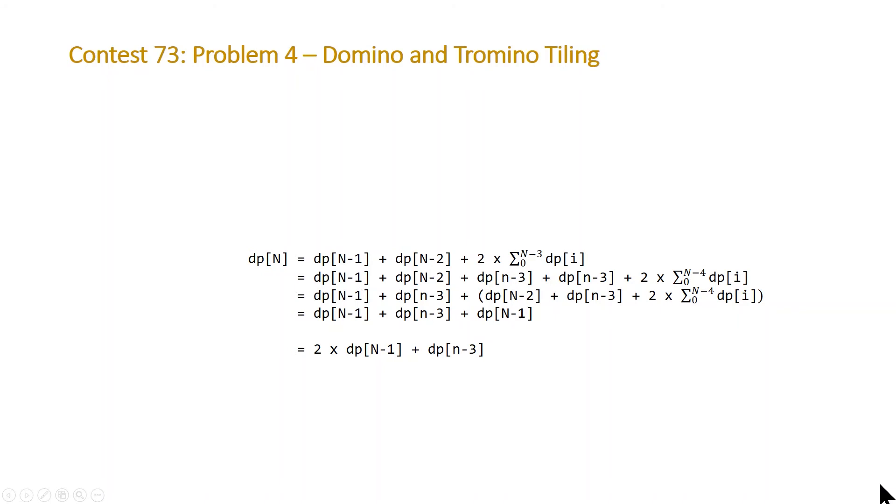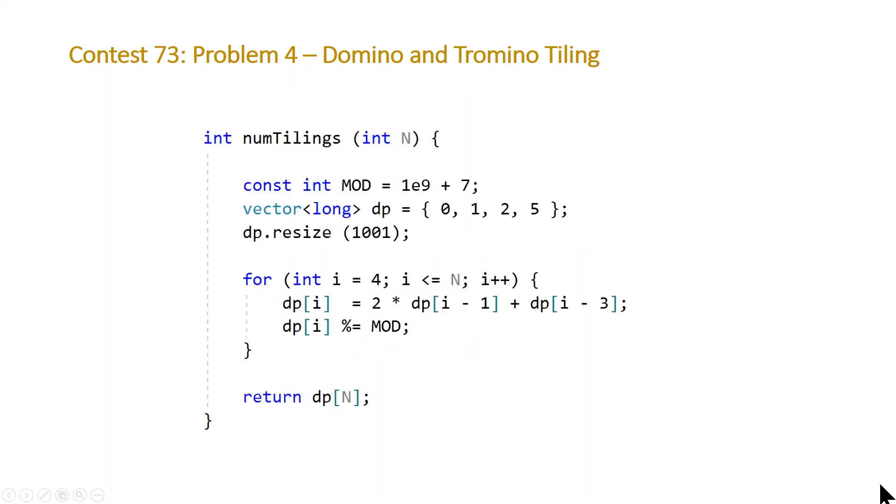So let's take a look at our code. Here we have a simple function. The first thing we're going to do is declare a local constant mod, which is equal to our modulus divisor. And then we have our vector. We're going to declare it for longs and not ints because we are not sure if int is going to be large enough when we're doing this multiplication and addition.